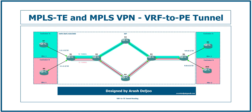Let me talk about this difference and how we can solve the problem. Here we have two customers: Customer A Site 1 and Customer B Site 1 connected to Router 1, the first PE router. Customer A Site 2 and Customer B Site 2 are connected to Router 6. We need to forward traffic of Customer A from R1 to R2 to R3 to R5 to R6, and also forward Customer B's traffic through a tunnel.